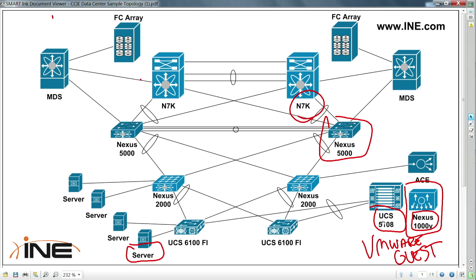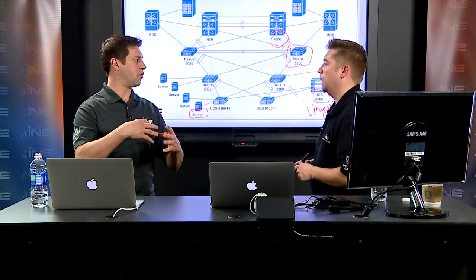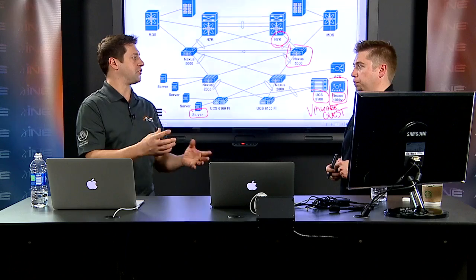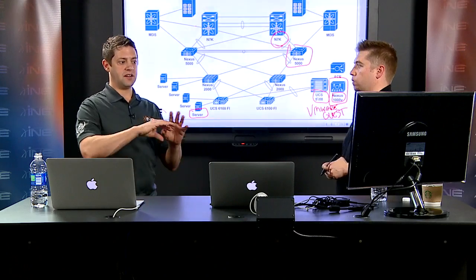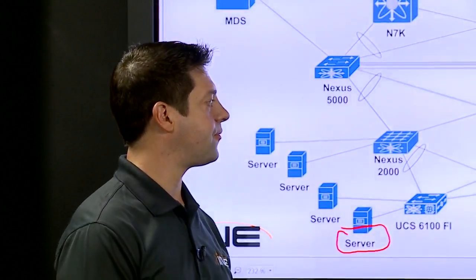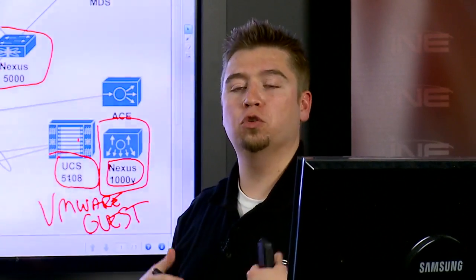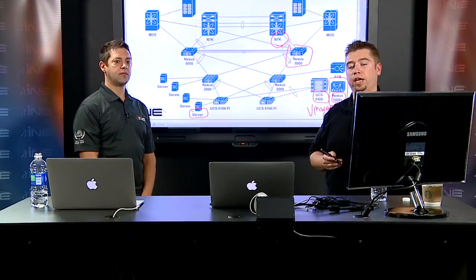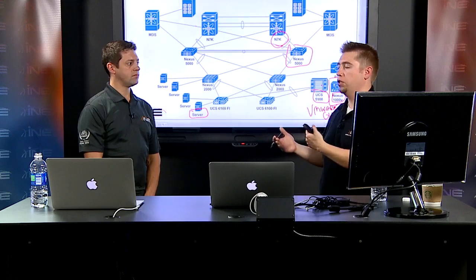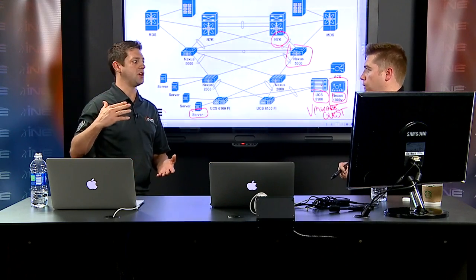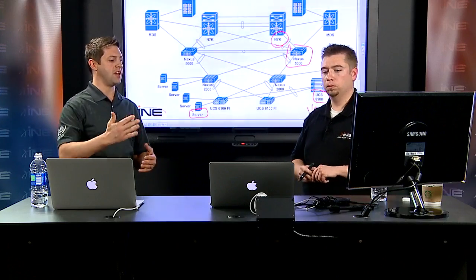Previously, when everything was physical, management was simpler: a physical server linked to a physical switch. With the Nexus 1000v, we get that visibility back. We can span ports, remote span ports, plug in ACLs, enforce QoS, or attach a virtual security appliance. Even though it runs in software, it looks exactly like a physical switch — with access ports, VLAN assignments, QoS policies — and you SSH into it just like a normal Nexus switch.